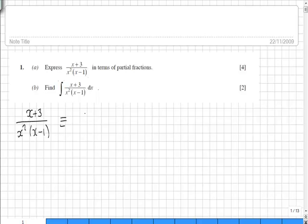So that would be the same as A over x plus B over x squared plus C over x minus 1.